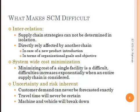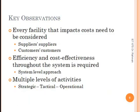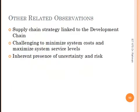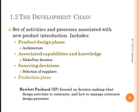Considering these effects and losses, we have to improve and integrate our supply chain management system. The key observation is that we must consider every facility that impacts cost in the chain and look at efficiency and cost effectiveness throughout the entire system. We also have to link supply chain strategy for new products. When a new product is introduced, a new chain — called a developmental chain — should be developed and integrated into the mainstream supply chain strategy.